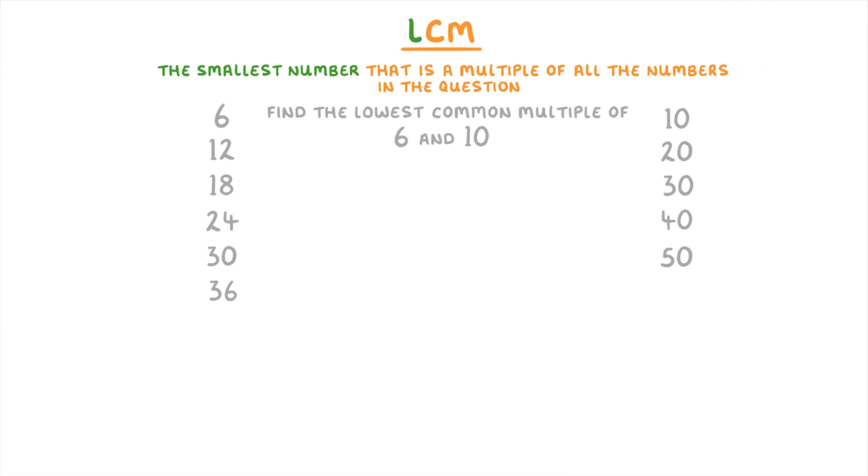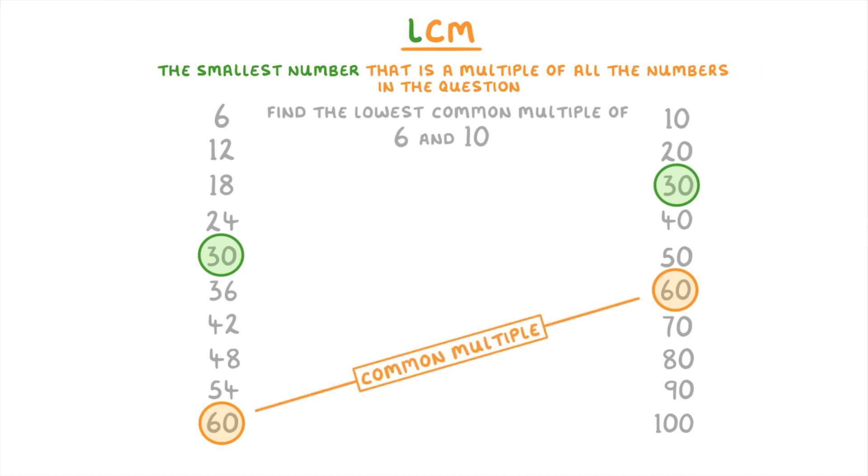Then we'd look at both of these lists and find the first number that occurs in both of them, which is 30. If we had carried on going though, we'd have seen that 60 also occurs in both of the lists. So 60 is also a common multiple. However, because 30 is a lower number, 30 is the lowest common multiple, which is what we're trying to find.